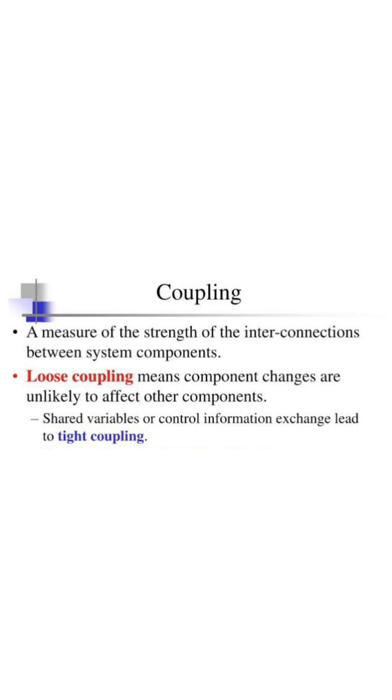Coupling, a measure of the strength of the interconnection between system components. Loose coupling means component changes are unlikely to affect other components. Shared variables or control information exchange lead to tight coupling.